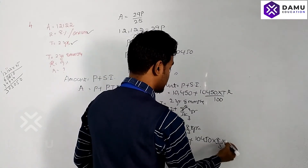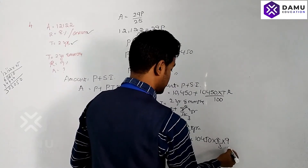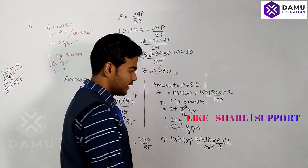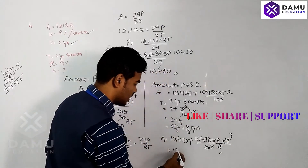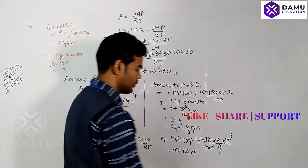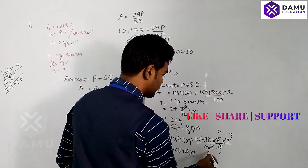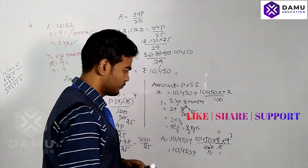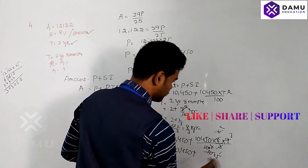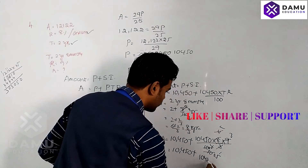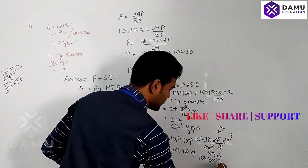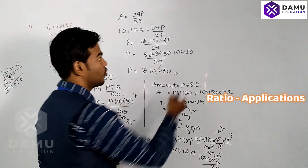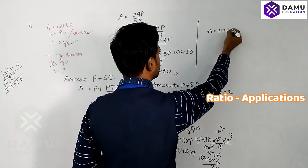Rate R is 9%, so Amount = 10,450 + 10,450 × (8/3) × 9 / 100. Simplifying the interest part: 10,450 × 8 × 9 / (3 × 100) = 10,450 × 6/25.